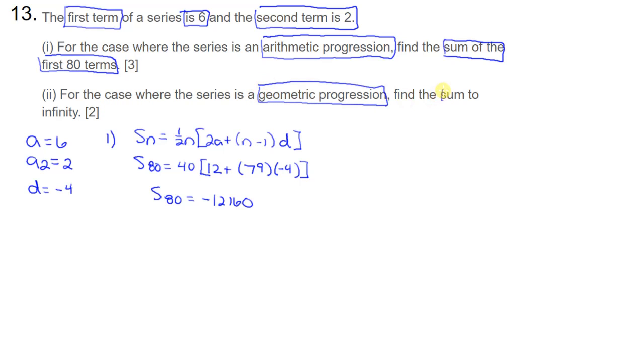Now, in part 2, it's a geometric progression. They want us to find the sum to infinity. This is also pretty straightforward because we've got a formula for sum to infinity and that is just A over 1 minus R. And so all I've got to do is figure out what my R is. Well, my R is going to be 2 divided by 6 or 1 third.